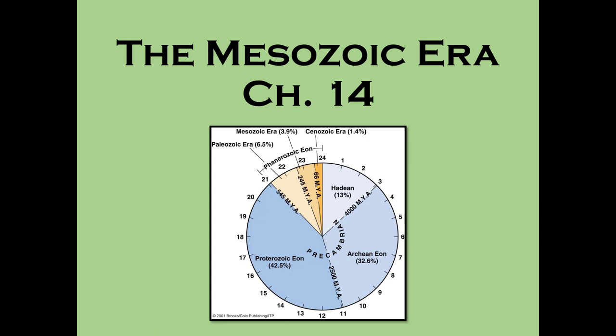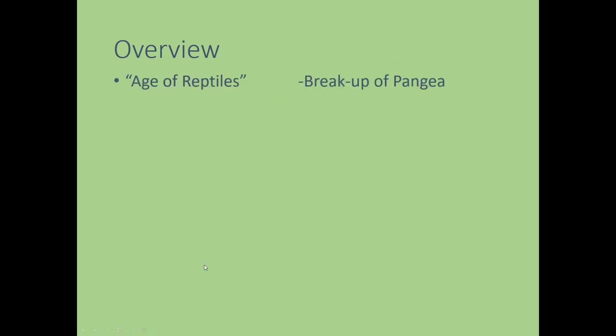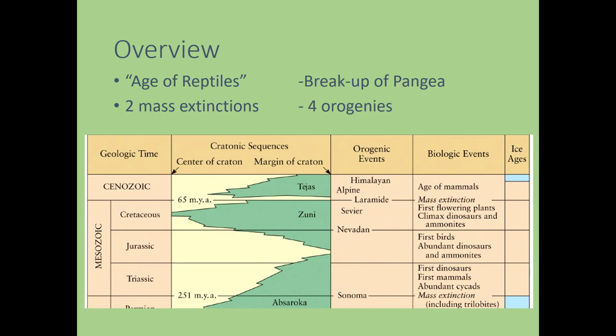The Mesozoic era is known as the age of reptiles — the time when dinosaurs became the dominant life form on Earth. It is characterized at the very beginning by the breakup of Pangaea, towards the end of the Triassic period. At the end of the Triassic there's one of two mass extinctions in the Mesozoic. The second extinction is the one that killed most dinosaurs — though not all, since birds are dinosaurs. The era is also characterized by four mountain-building events, or orogenies.